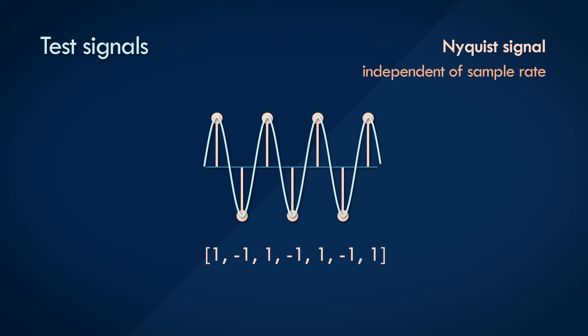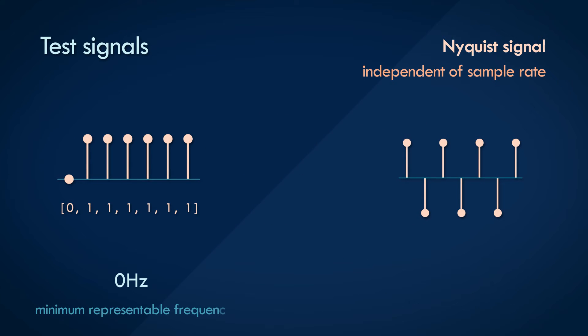For the first signal, we chose 0Hz, the minimum representable frequency, and after that, the Nyquist frequency signal, the maximum representable frequency. You can see what we are doing here—selecting signals to test the boundary conditions of possible frequencies that a filter might encounter. Now, we select a couple more signals just to spread them out a little.